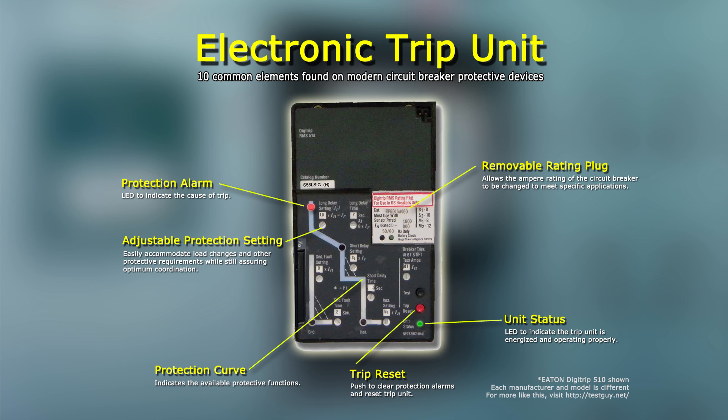Number 7: Test Kit Connection. Test connections can be made directly at the solid-state trip unit, as these devices are almost universally equipped with test plug terminals for conducting a periodic test. The secondary test set injects a simulated secondary current to allow checking of the trip unit operation without the need for injecting primary current through the current sensors.